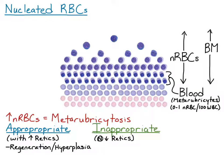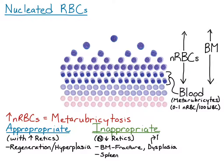In general, there are two organ systems that can be injured or diseased with inappropriate metarubrocytosis. The first is the bone marrow, which is prematurely releasing nucleated red blood cells before it should. Bone marrow causes include bone fractures, certain dysplasias such as lead poisoning, and some neoplasias — especially erythroid leukemia, which is a neoplasia of the red cell line.